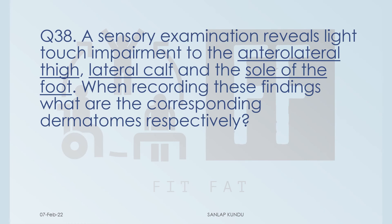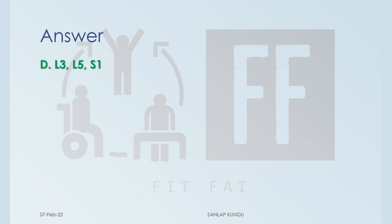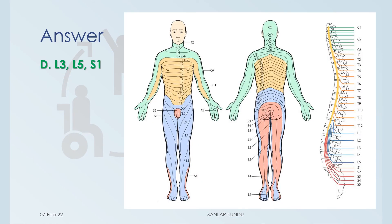Question number 38: a sensory examination reveals light touch impairment to the anterolateral thigh, lateral calf, and the sole of the foot. What are the corresponding dermatomes respectively? The correct answer is option D: L3, L5, and S1. For the anterolateral thigh the dermatome is L3, for the lateral calf it is L5, and for the sole of the foot it is L4, L5, or S1 — but never S2.